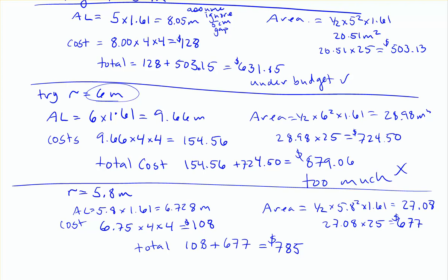But you can see here my cost for arc length is going to be roughly $108, with a radius of 5.8. My area cost for the flowers is going to be roughly $677. And just to point this out real quick, I didn't do it in the last example, but I wanted to do it here.